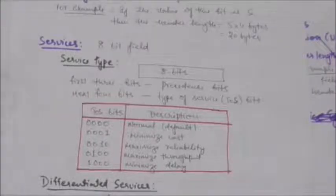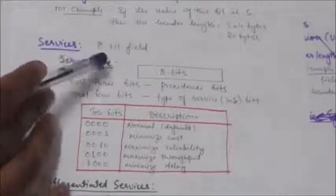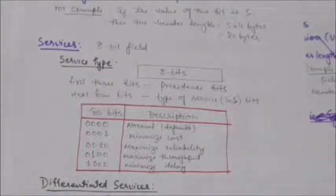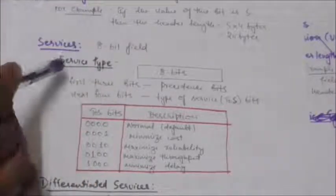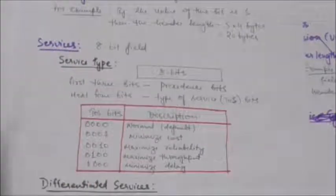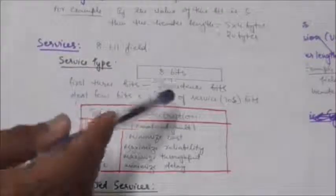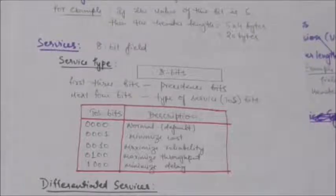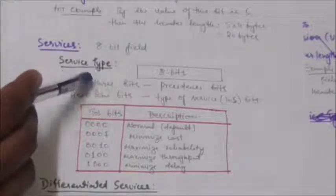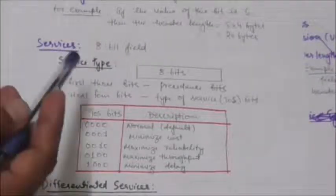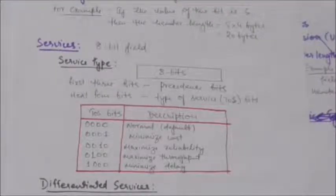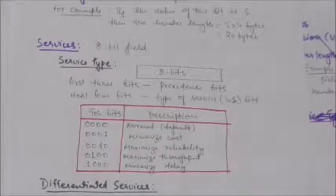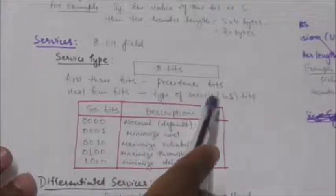The next field is Services — an 8-bit field. Previously it was called Service Type; now it is called Differentiated Services. In the Service Type interpretation, the first 3 bits are called precedence bits and the next 4 bits are called type-of-service bits; the last bit is not used. Precedence is a 3-bit subfield that defines the priority of the datagram. If a router is congested and needs to discard datagrams, those with the lowest precedence are discarded first.